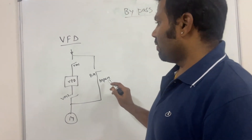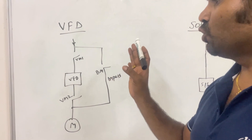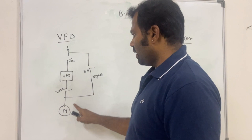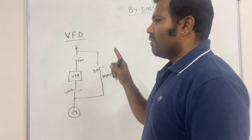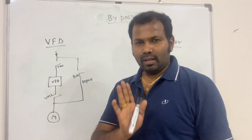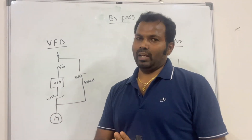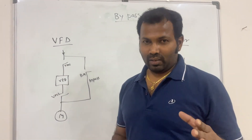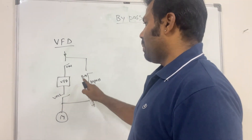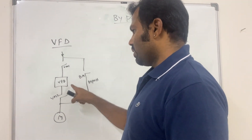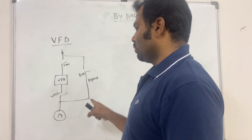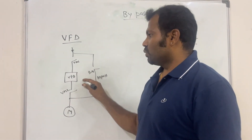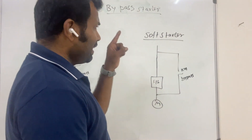When we use a bypass starter with a VFD, the VFD is given priority — the load will always be running through the VFD. When the VFD is malfunctioning or not working, the bypass starter will be used. The VFD will be stopped and the bypass starter will be used to run the motor.